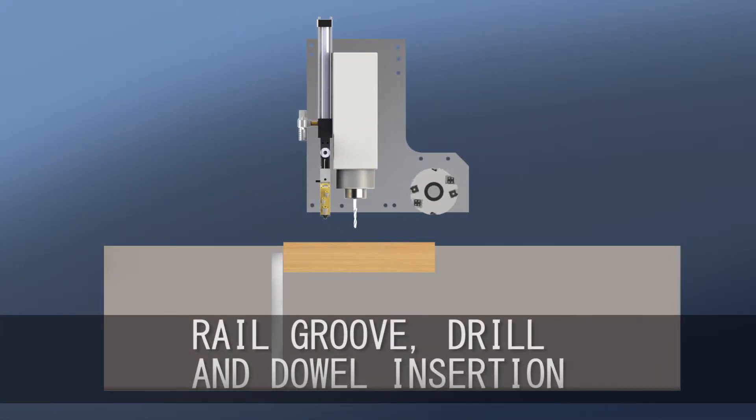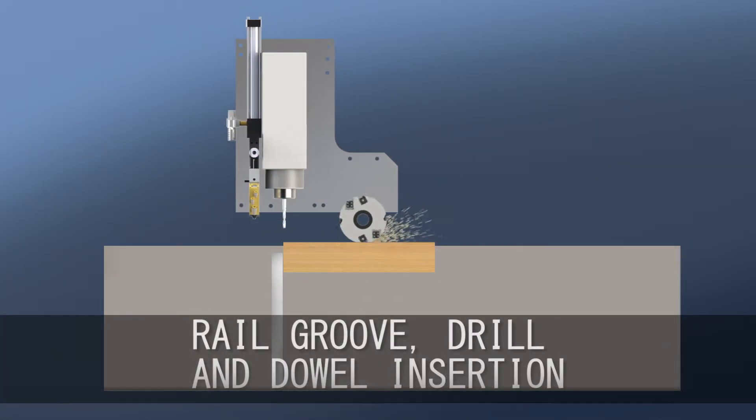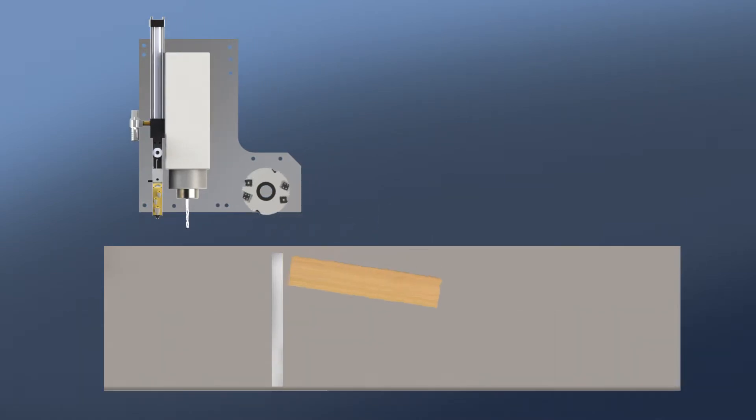When drilling holes, inserting dowels and adding a panel groove to the rails, the user can pendulum process the groove first in zones 3 or 4, then move the rail to zones 1 and 2 for drilling and doweling.